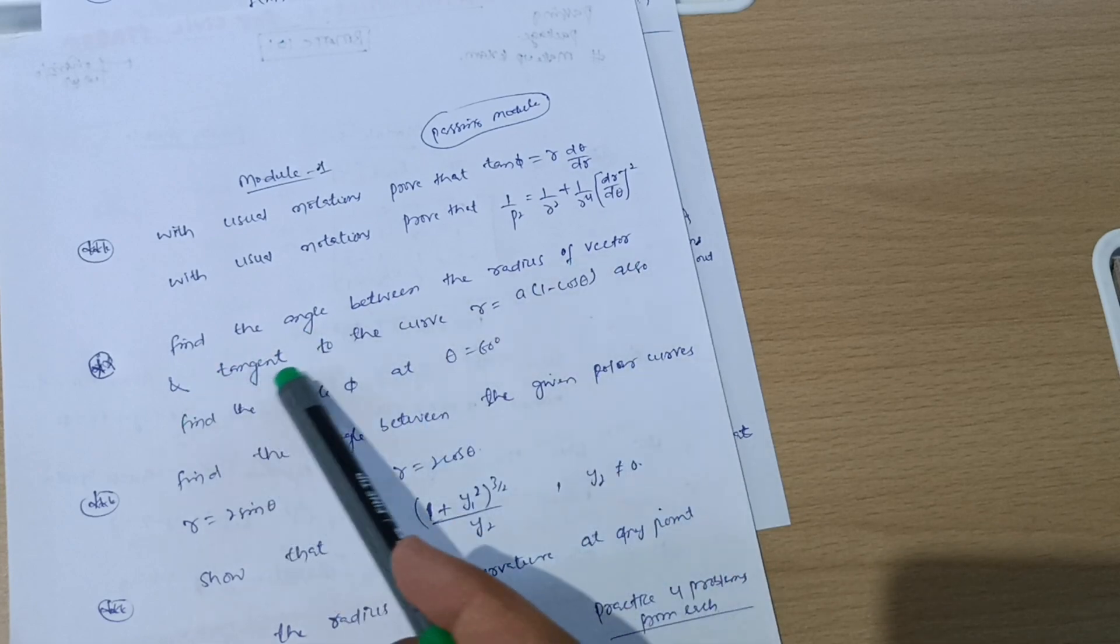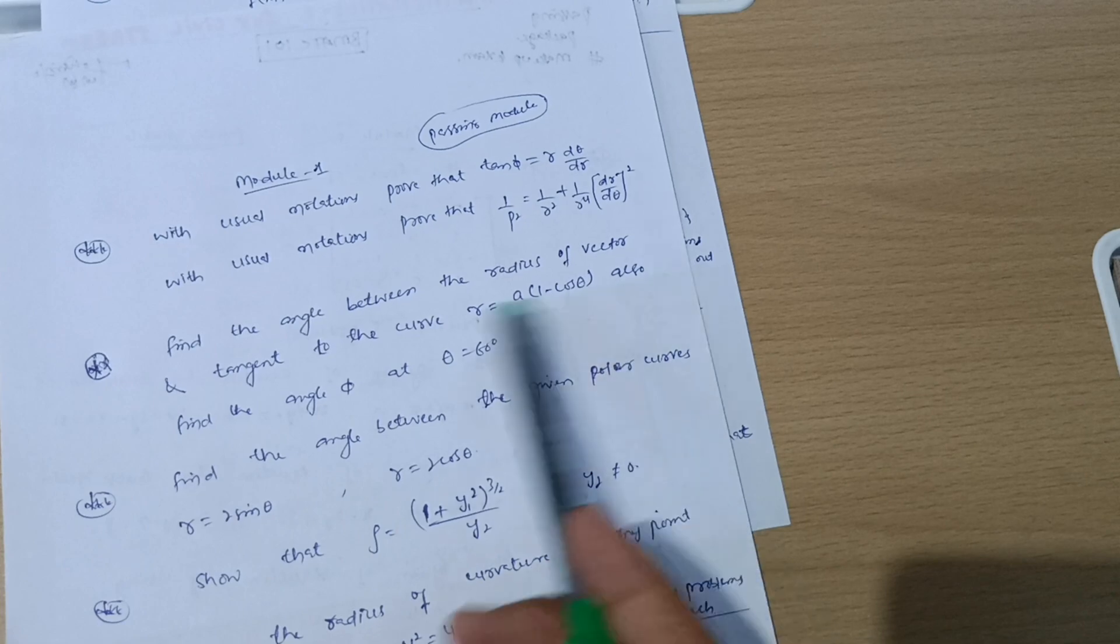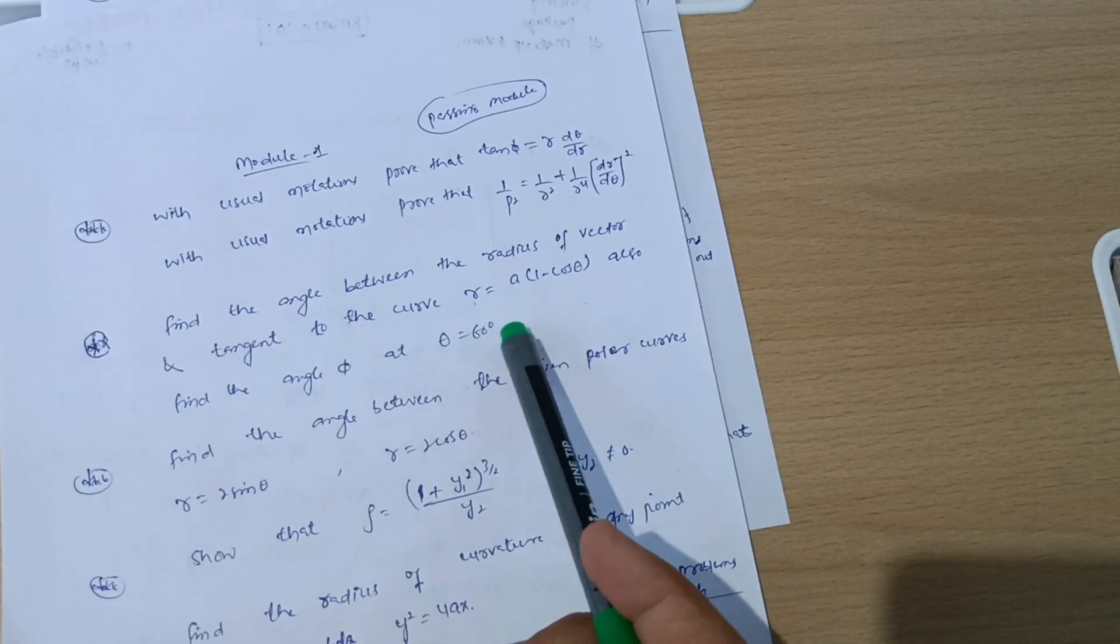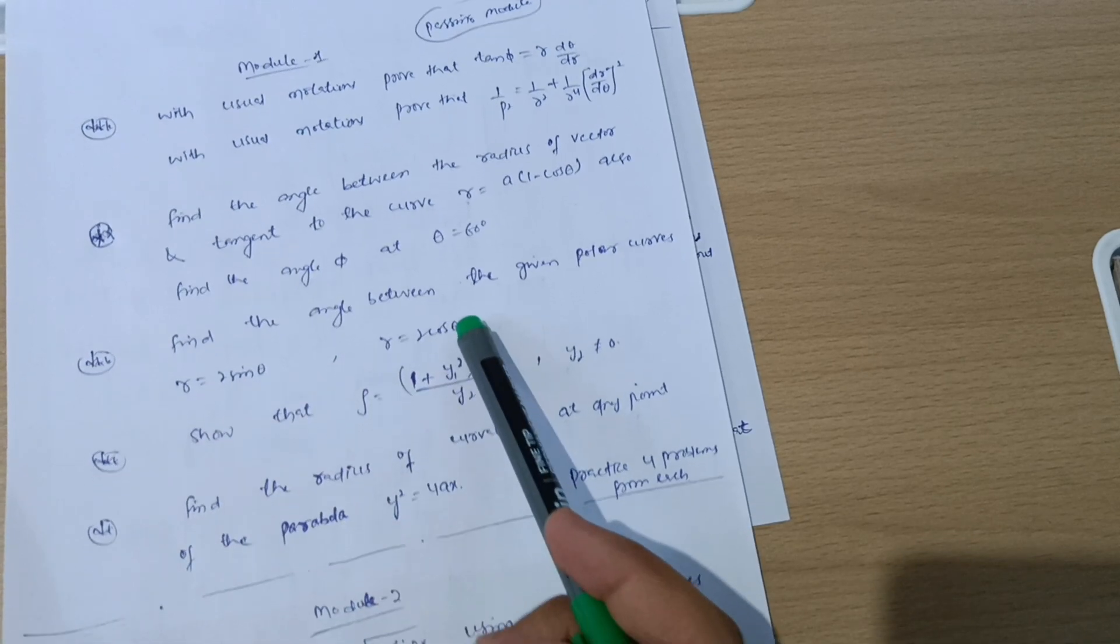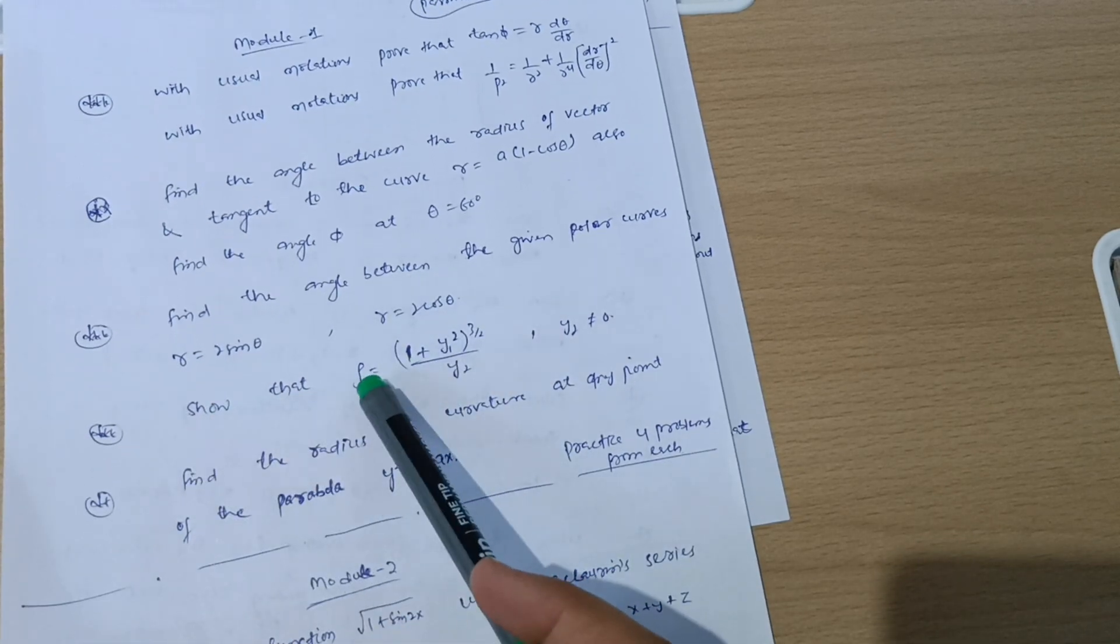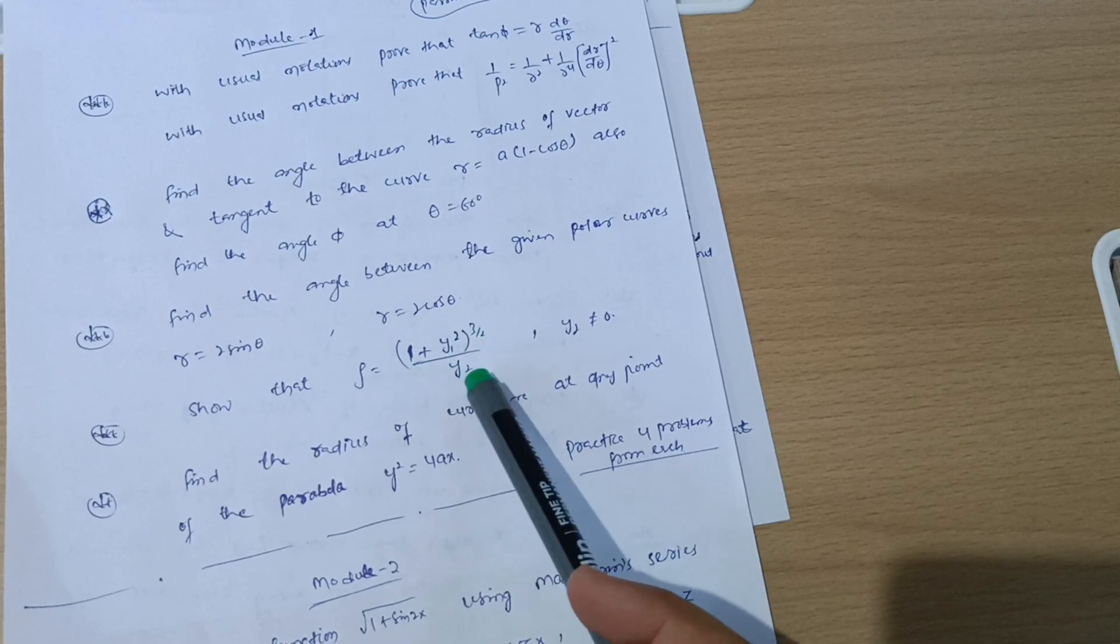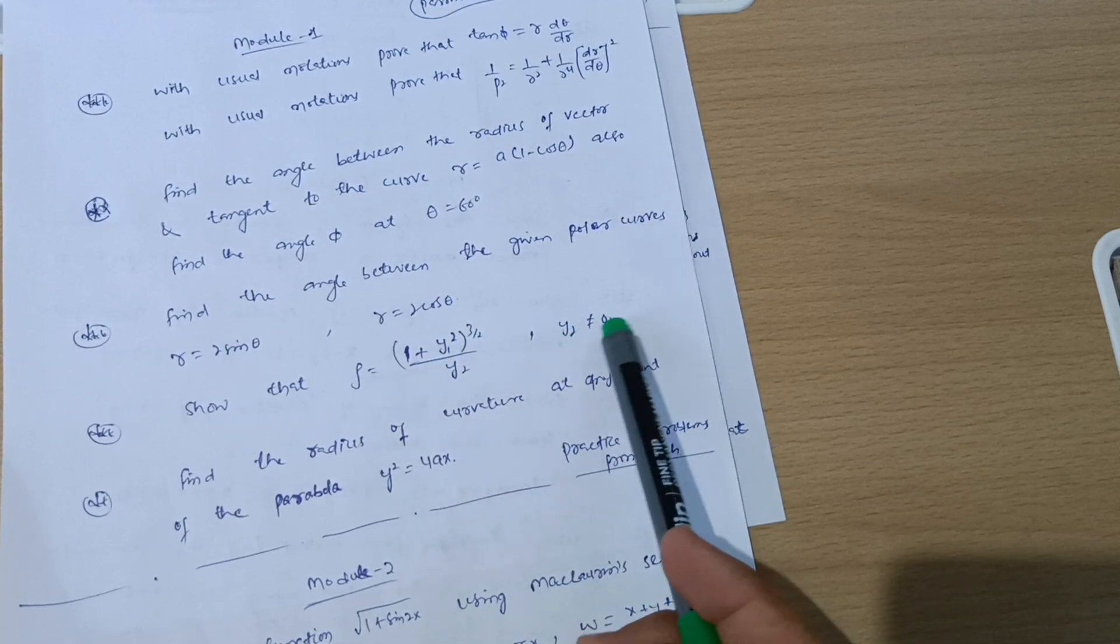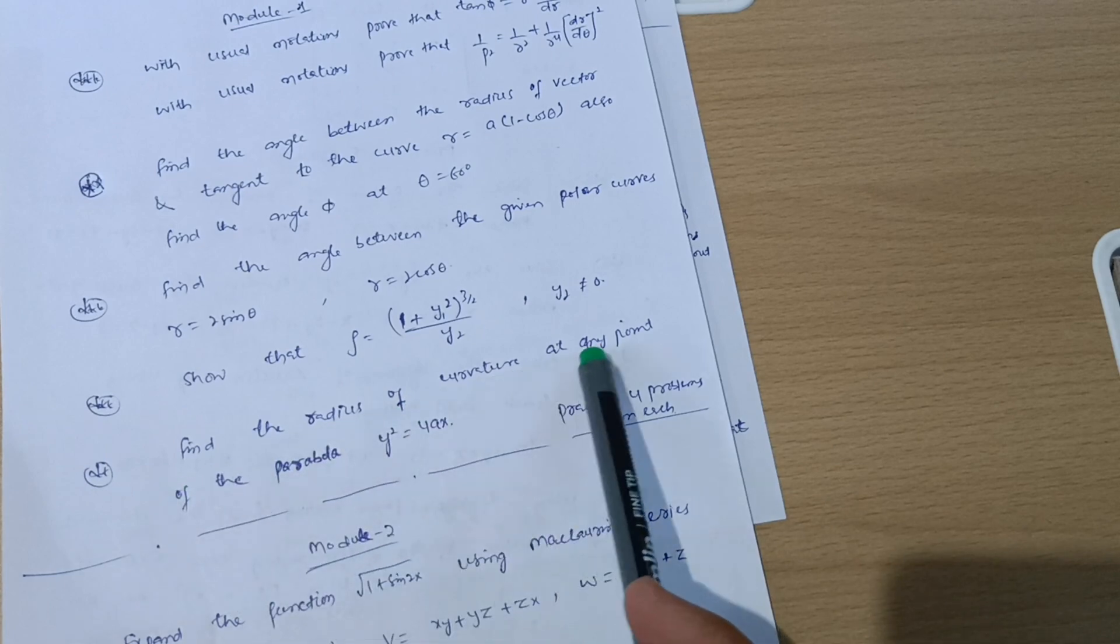Also find the angle φ at θ = 60 degrees. Find the angle between the given polar curves r = sin θ, r = cos θ. Show that ρ = (1 + y₁²)^(3/2) / |y₂|, where y₂ is not equal to 0. This is the radius of curvature.